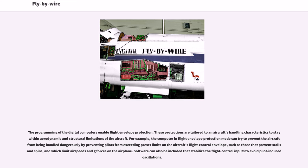The programming of the digital computers enables flight envelope protection, tailored to an aircraft's handling characteristics to stay within aerodynamic and structural limitations. For example, the computer in flight envelope protection mode can prevent the aircraft from being handled dangerously by preventing pilots from exceeding preset limits on the flight control envelope, such as those that prevent stalls and spins and which limit airspeeds and g-forces. Software can also be included that stabilizes flight control inputs to avoid pilot-induced oscillations.